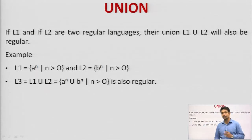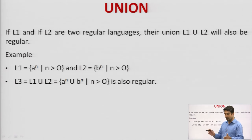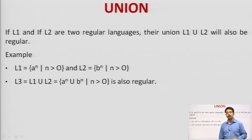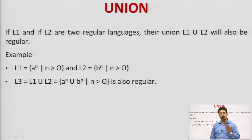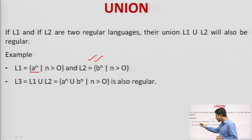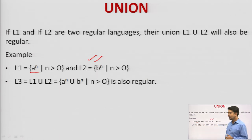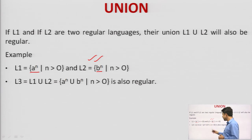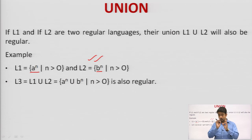Next comes union. Union is similar: if you take a language which is already regular and another language which is already regular and do the union operation, you will get a regular language only. So we can say that regular language is closed under union. For example, A^N where N is greater than 0 union B^N where N is greater than or equal to 0 will produce a regular language.